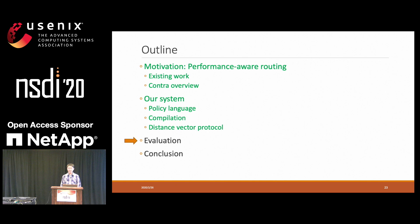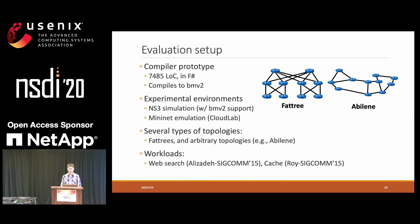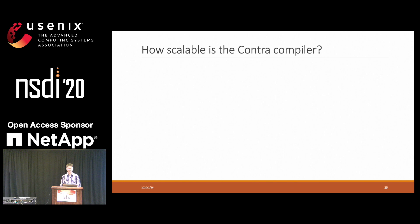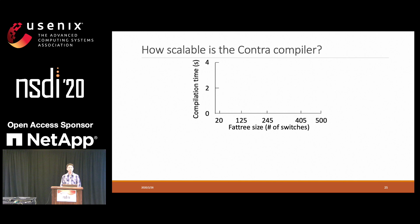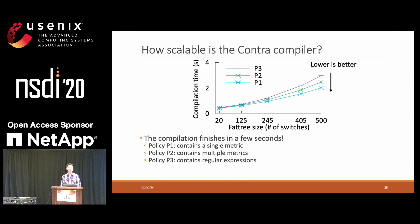Next, I will show you the evaluation for Contra. We built a prototype of Contra and conducted experiments on NS simulation and Mininet emulation. We tried several types of topologies, including Fat-tree and Abilene as examples of arbitrary topologies. To understand the scalability of Contra, we measured the compilation time when Contra compiles policies on Fat-tree with different sizes — lower is better. We tried three policies with different complexities and finished all of them in just a few seconds. Note that the whole compilation process runs before deployment, so it is not in the critical path.